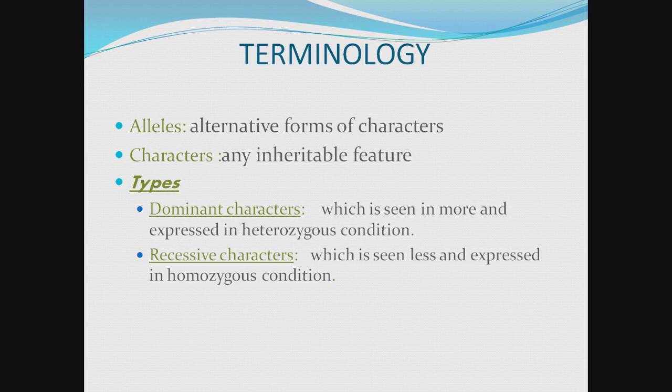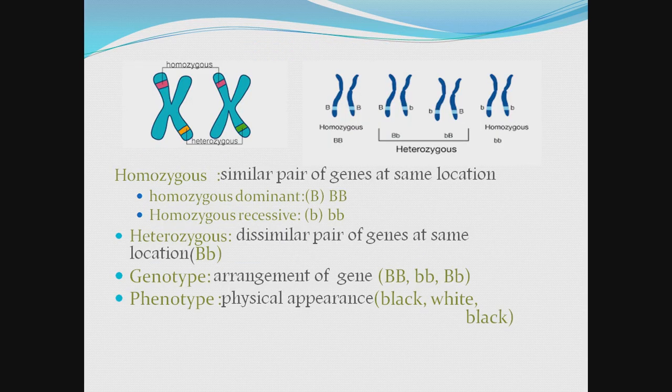The characters which are expressed more, or expressed in a heterozygous condition, are called dominant characters. The characters which are expressed less and only in a homozygous condition are called recessive characters. If a chromosome carries two identical genes for a character, it is called homozygous. If a chromosome carries two different genes for the same character, it is called heterozygous.